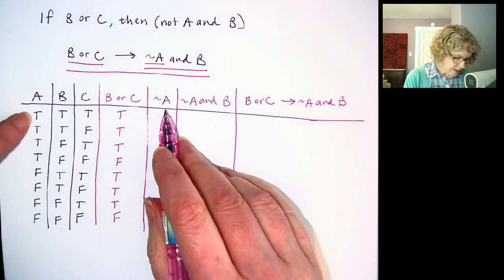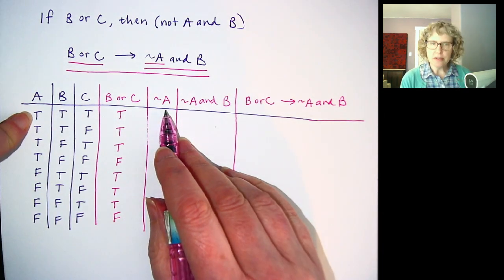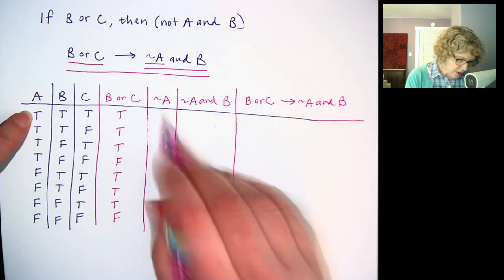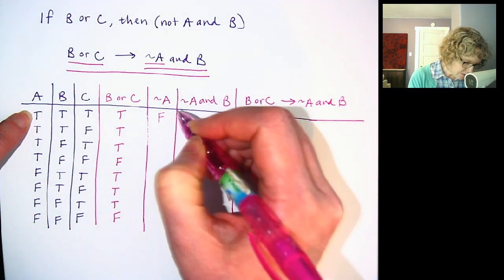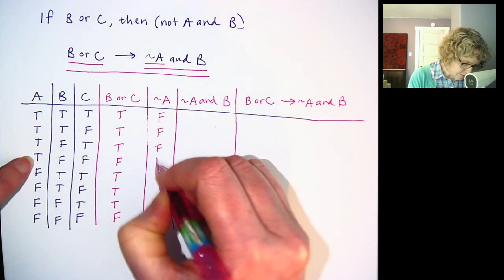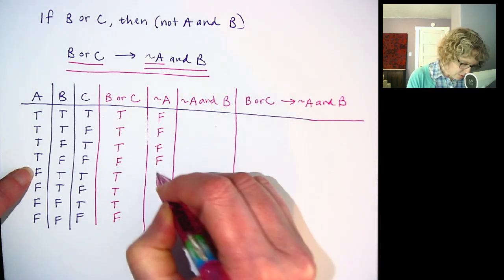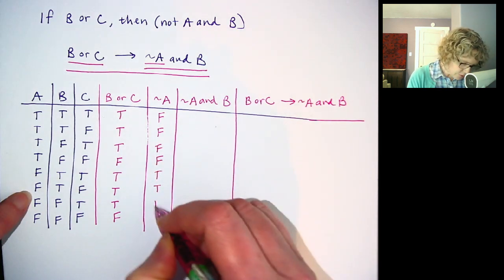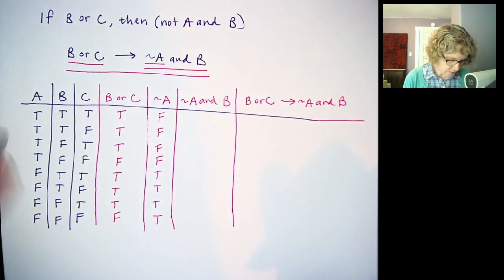Then we have not A. So not A is the opposite of A. So if A is true, not A is false. So I'm going to do the complete opposite of the A column. True, true, true, true. Okay.